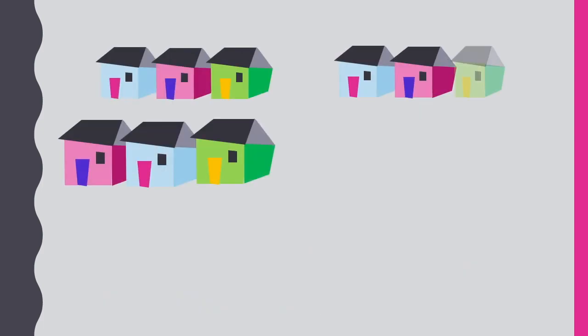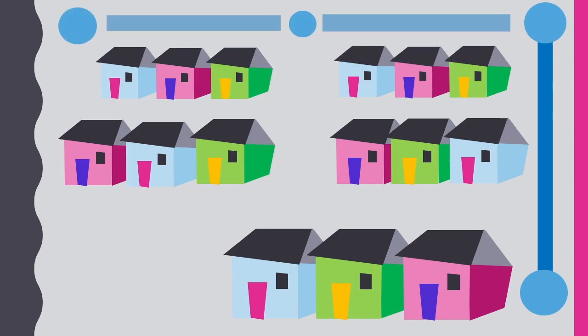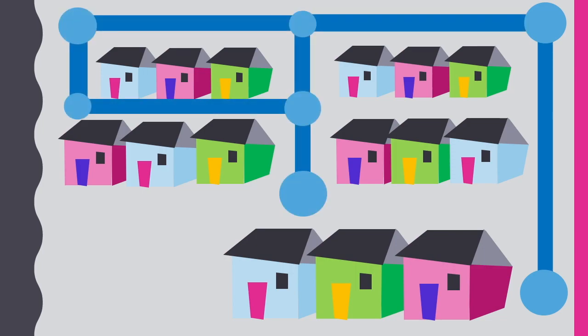How about this graph? Is there a route we can take that only travels along each road once? It appears to be much simpler than the previous graph, but when we enumerate the degree at each vertex, we can see that there are too many odd vertices.